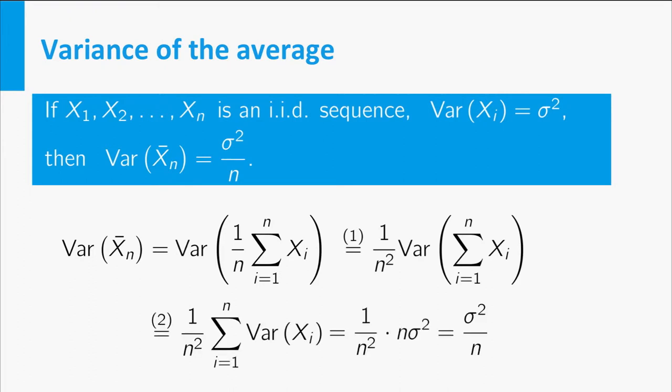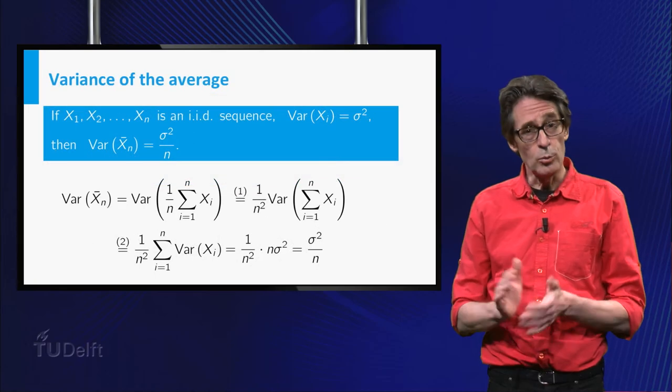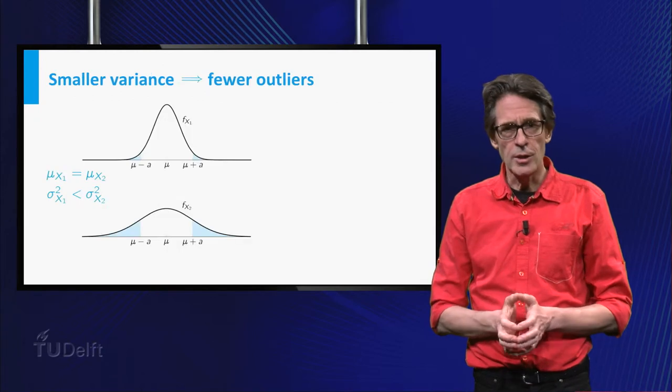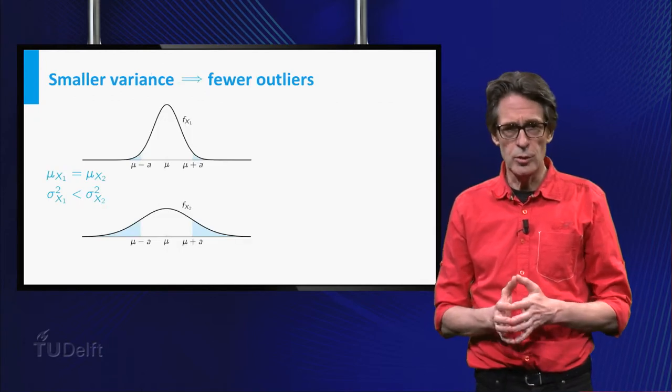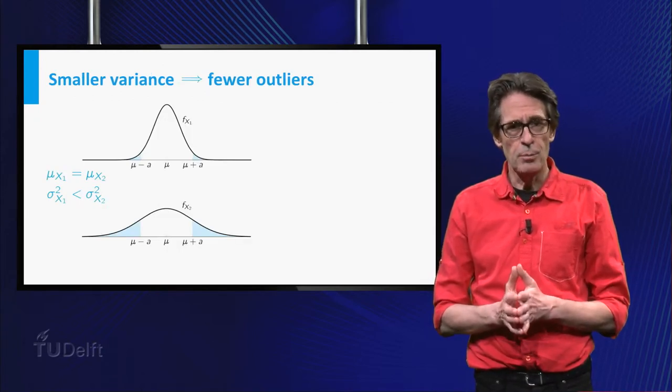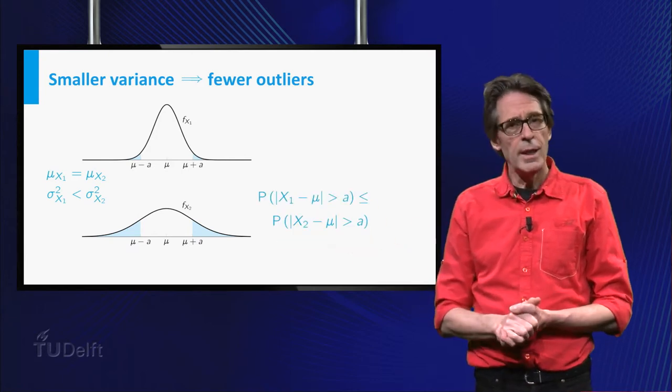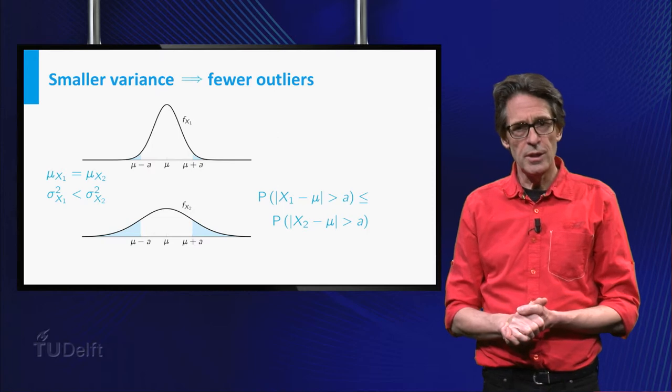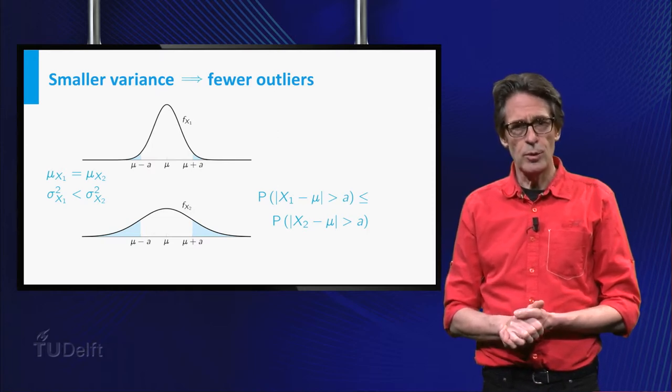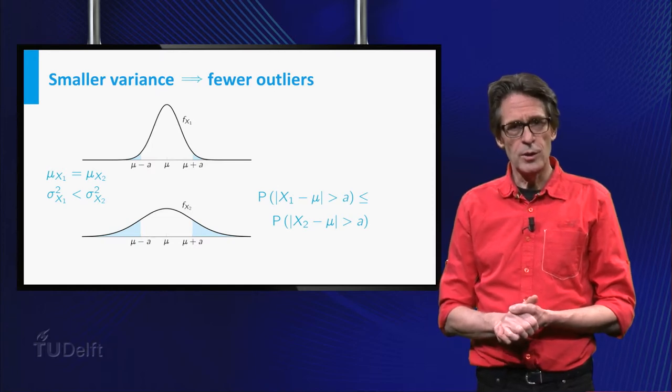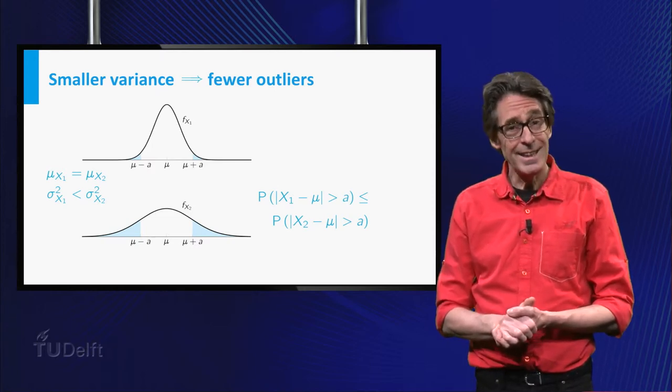So for larger n the variance of the average becomes smaller. Intuitively, this means that for larger n the average will stay closer to the expectation. The picture gives a nice display of this. In the opening example, assuming the individual measurements have the exact melting point as expectation, the average will get closer to this true melting point as n increases.